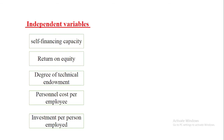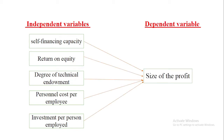We will start with a practical example. There is a particular study with five independent variables, while the dependent variable is the size of the profit. The dependent variable — size of the profit — is being affected by these five independent variables.